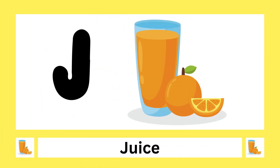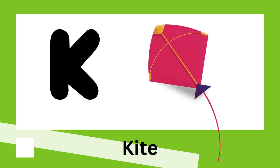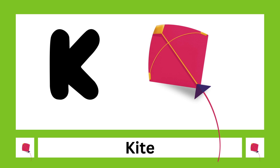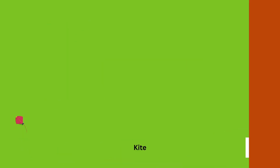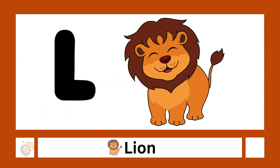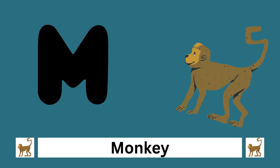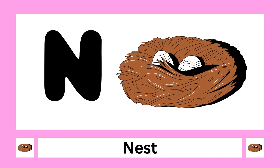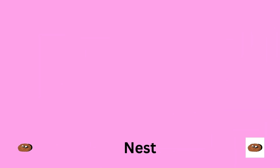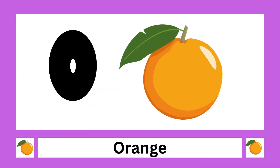J is for juice, K is for kite, L is for lion, M is for monkey, N is for nest, O is for orange.